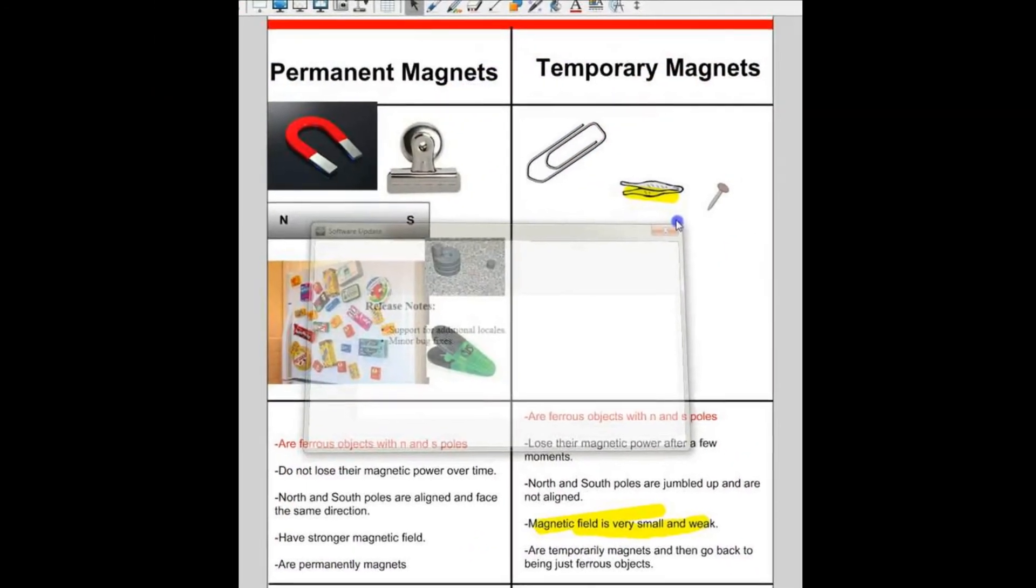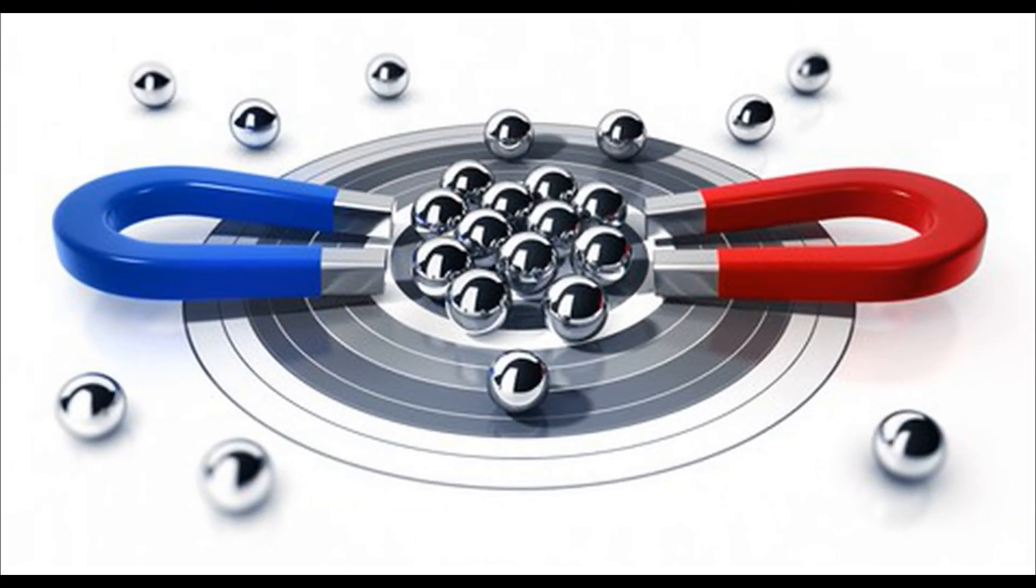Permanent and Temporary Magnets. Permanent Magnet: Certain types of iron, once magnetized, retain their magnetism. Such magnets are called permanent magnets.